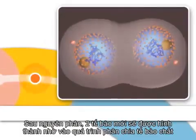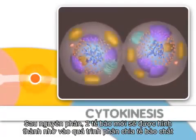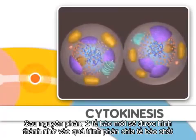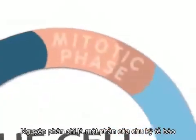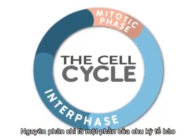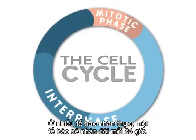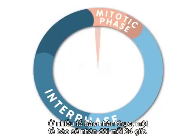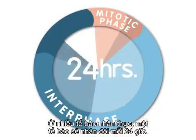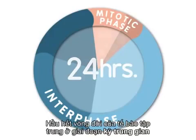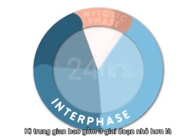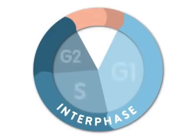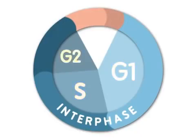After mitosis, two new cells are formed by a process called cytokinesis. Mitosis is only one part of what is called the cell cycle. For many eukaryotic cells, a cell is duplicated every 24 hours. Most of the life of a cell is spent in interphase. Interphase consists of three stages called G1, S, and G2.